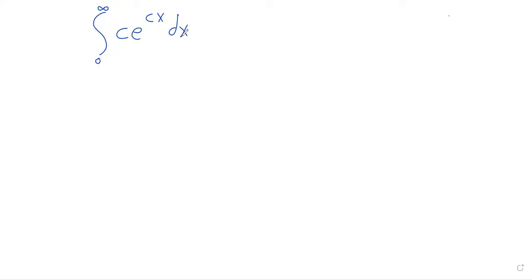We'll continue talking about probability and probability distributions today. Yesterday, we looked at a probability distribution that looked like Ce^(-cx), where C is any positive constant. This is a probability distribution.